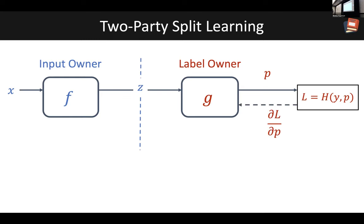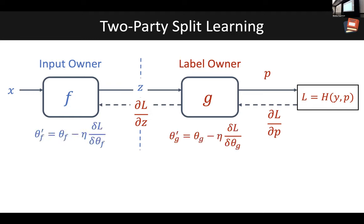In the back-propagation step, the gradient of the loss with respect to the embedding is computed and shared back to the input owner. Since everyone has the gradient information, both the input and the label owner can use this loss gradient to update the model parameters with the objective of minimizing the loss. This completes one iteration of the training process, which is repeated across different examples to iteratively train the models.